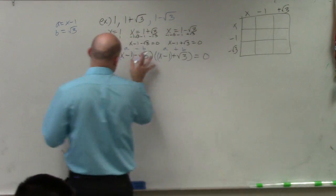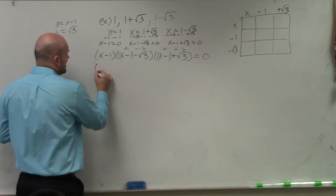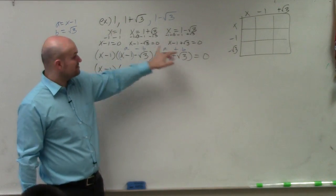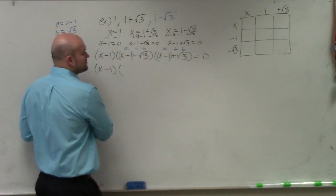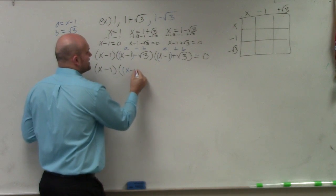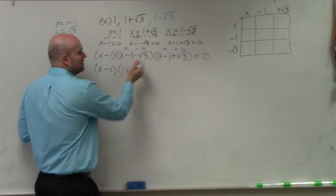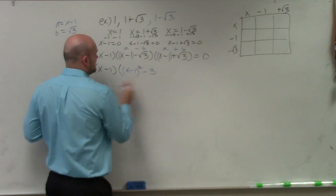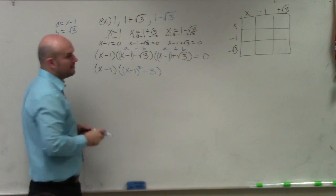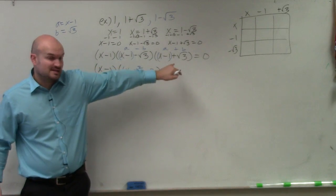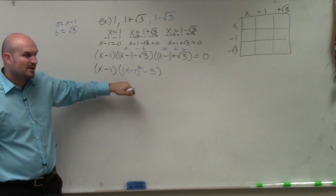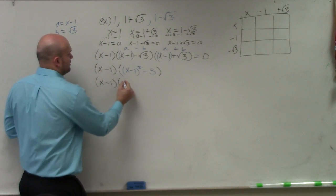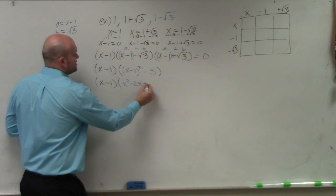So if I group them like this, the difference of two squares tells me to just multiply the first two terms and the last two terms, because the middle terms will cancel out. So x minus 1 times x minus 1 is x minus 1 squared. Negative square root of 3 times positive square root of 3 is negative 3. Binomial squared is really easy to figure out — this becomes x squared minus 2x plus 1 minus 3.